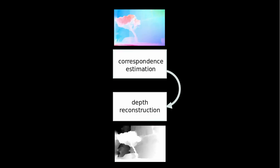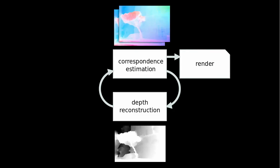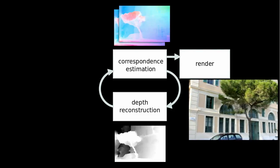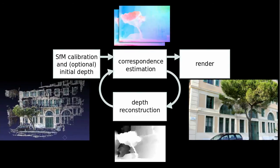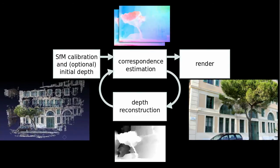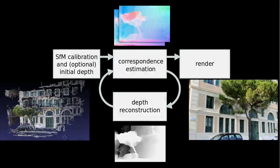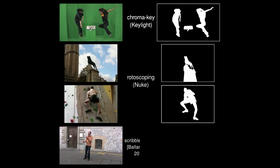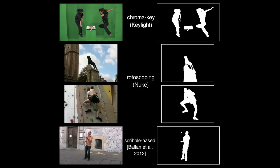In our reconstruction pipeline, we iteratively refine the estimates for image correspondences and per-pixel depth. We also include a sparse initial depth estimate from state-of-the-art multi-view stereo algorithms. If available, high-level scene segmentation from chroma keying, rotoscoping, or other techniques can be incorporated.